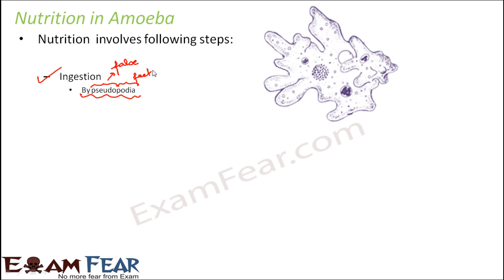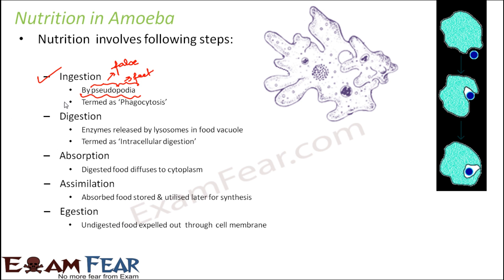Pseudo means false and podia means feet, so pseudopodia is like false feet — not true feet but false feet. Amoeba doesn't have a very specific shape; it has an irregular shape and is very flexible in changing its shape. Pseudopodia are extensions of the body which crawl on the surface, helping it move from one place to another. This pseudopodia also helps in the intake of food, and this process is called phagocytosis.